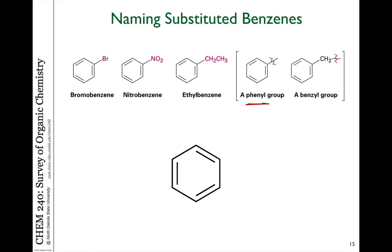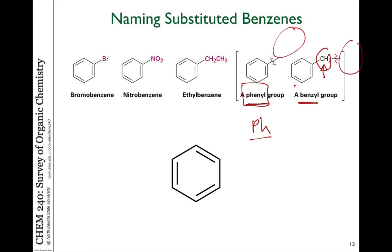If benzene rings appear as substituents on larger molecules, we need a name for that. A benzene ring attached directly onto something larger is referred to as a phenyl group, sometimes abbreviated as Ph. If there's an additional carbon in between — such as a CH2-benzene arrangement — that is referred to as a benzyl group on a larger molecule.